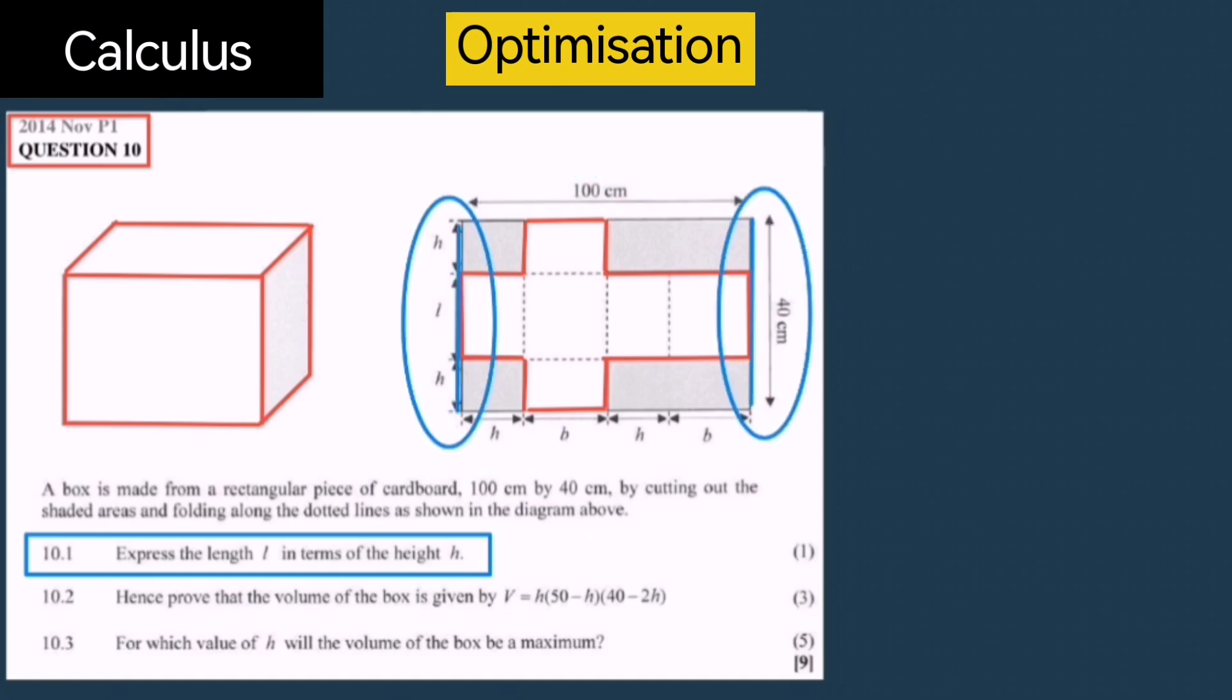Notice this 40 cm side of the rectangular piece of cardboard is used to cut out both the length and the height. Notice that H plus L plus H again is equal to 40 cm. By grouping like terms we see that 2H plus L equals 40 cm and therefore L equals 40 minus 2H. This is basically the length expressed in terms of the height.